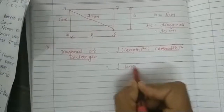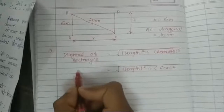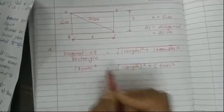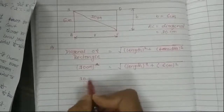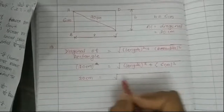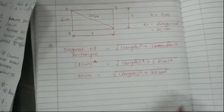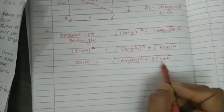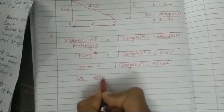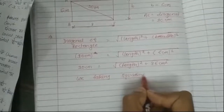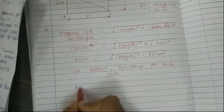So: the square root of length squared plus breadth squared equals diagonal. Breadth is given as 6 centimeters, diagonal is 10 centimeters. So: square root of length squared plus 36 equals 10. We take the square root of length squared and square both sides, so 10 squared gives us the next step.